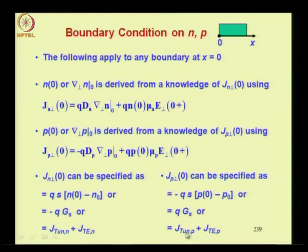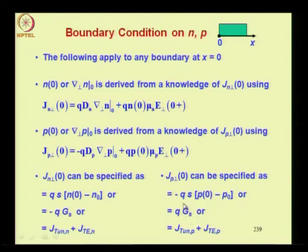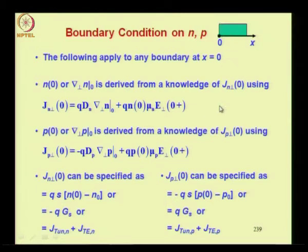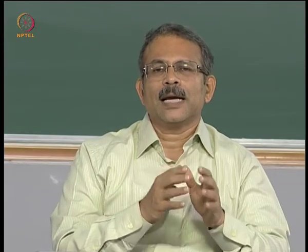The normal component of hole current can be specified using surface recombination velocity, generation rate at the surface, or tunneling and thermionic emission currents. The difference between hole and electron relations for perpendicular current density is a negative sign for J_p where there is a positive sign for J_n, and conversely a positive sign in the G_S relation for holes where there is a negative sign for electrons. The reason is that at a surface recombination site, both electrons and holes move toward the surface — this constitutes an electron current to the right but a hole current to the left. These boundary conditions are important in visualizing the current flow lines, which emanate perpendicular to contacts because the contact is an equipotential surface.